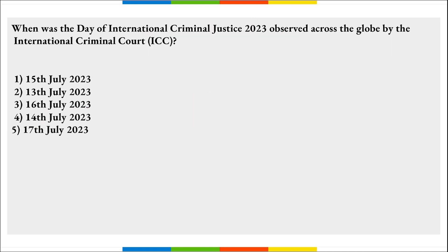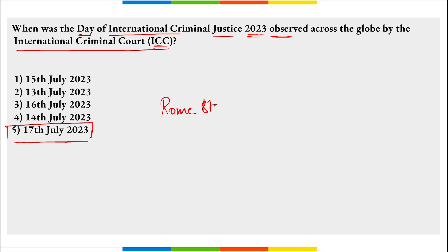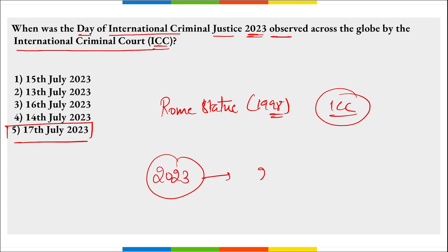When was the Day of International Criminal Justice 2023 observed by ICC — International Criminal Court? On 17th of July, it was observed to commemorate the anniversary of the adoption of the Rome Statute of 1998, the founding treaty of ICC. This day is also known as World Day for International Justice. In 2023, it was the 25th anniversary of the Rome Statute. The first ever Day of International Criminal Justice was observed on 17th July 2011.